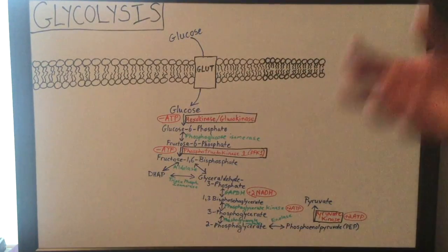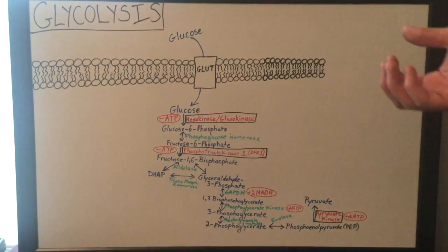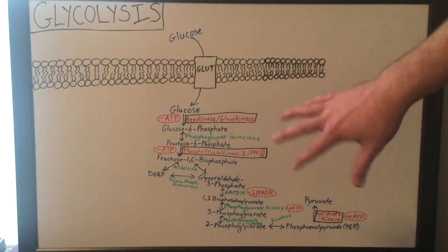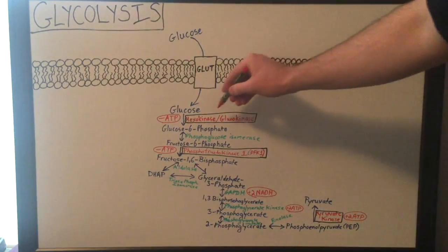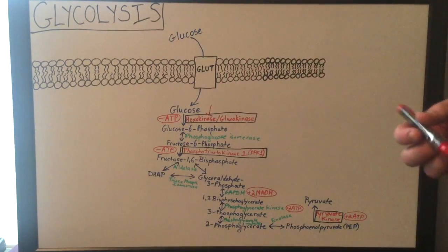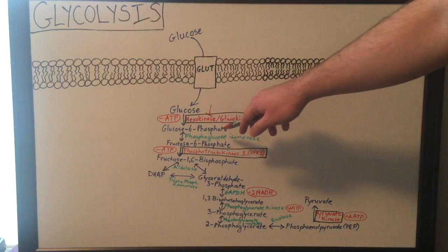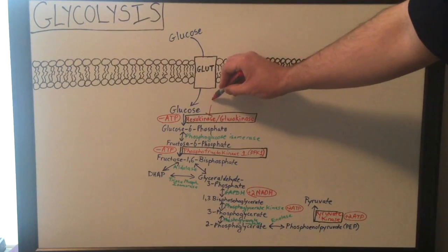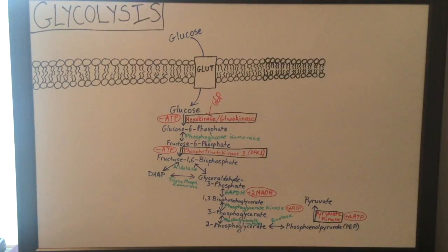Glucokinase is actually found in pancreatic beta cells and hepatocytes in the liver. Both hexokinase and glucokinase are regulated somewhat differently. Hexokinase is actually regulated by the product of its reaction, glucose 6-phosphate (G6P), whereas glucokinase is not. There are some other important differences as well, but we'll talk about those in another video.